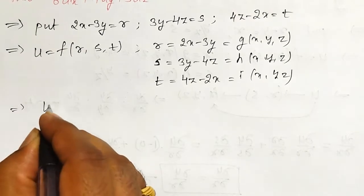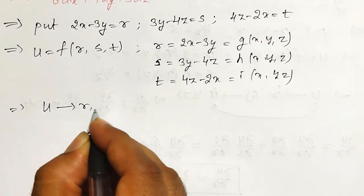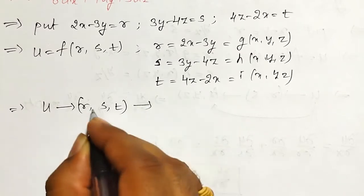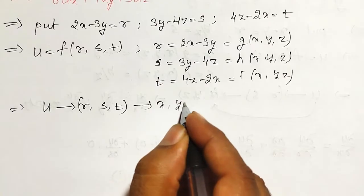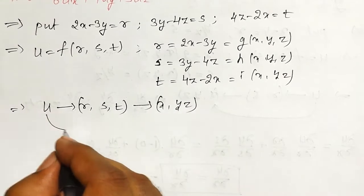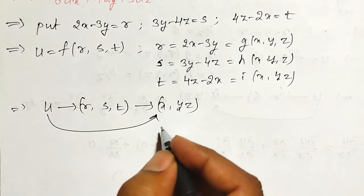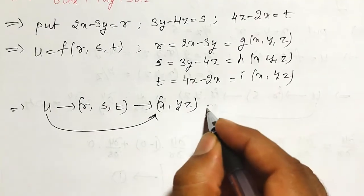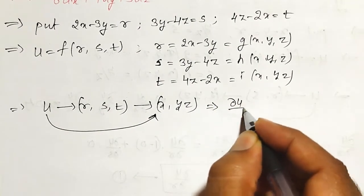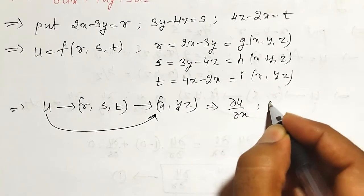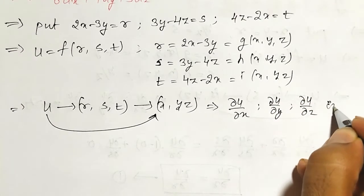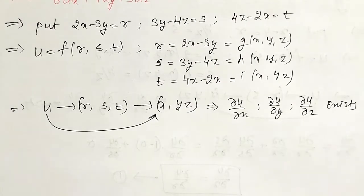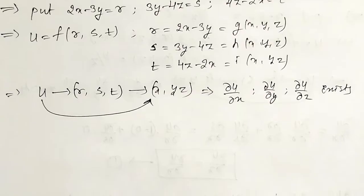That is, u is a function of r, s, t and r, s, t are the functions of x, y, z. Therefore, u is indirectly a function of x, y, z. Then there exist three partial derivatives: ∂u/∂x, ∂u/∂y, and ∂u/∂z. Then how to define them using the chain rule and how to find them out? We will discuss one by one.